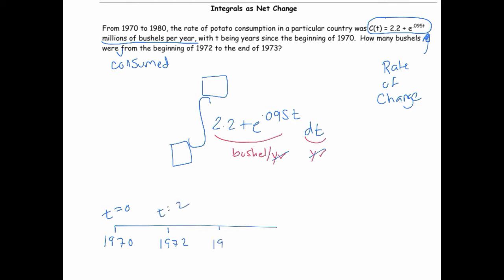And then you've got 1973, and then 1974, and since it says the beginning of 1972 to the end of 1973, we know we're integrating from 2 to 4.